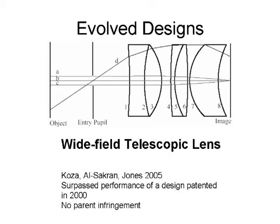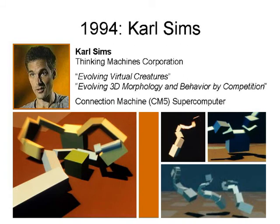Another example is in the design of lenses. A paper by John Koza, Sacharín, and Jones from 2005 listed six different lenses evolved using genetic programming. This particular wide-field telescopic lens configuration surpassed the performance of a lens that had been designed and patented in 2000. This means genetic programming produced results that were either patent infringements or themselves patentable — and this has become fairly routine for John Koza and genetic programming.